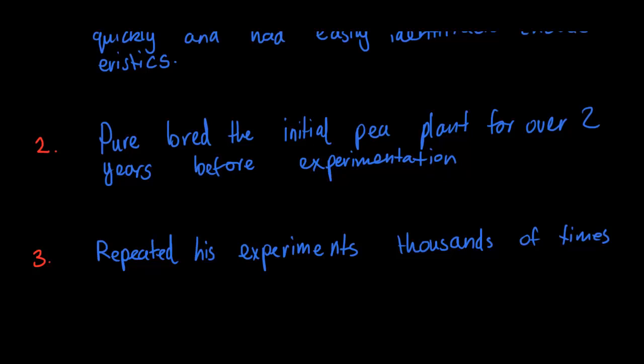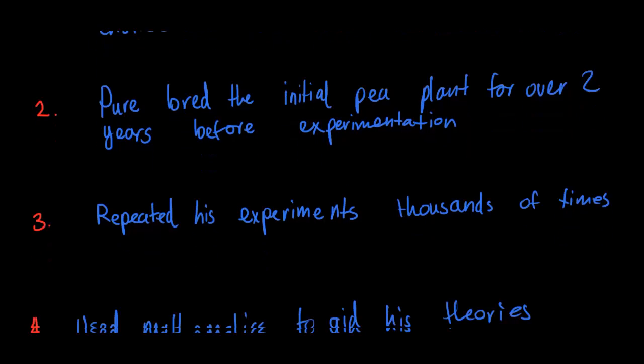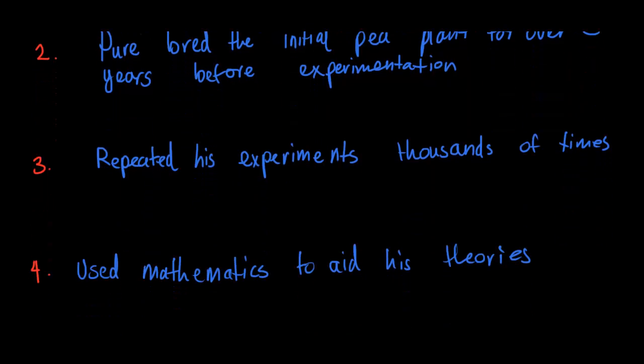Number three: he repeated his experiments thousands of times. I cannot stress this enough — in any experiment, you must repeat it in order to ensure reliability. Our teacher says repeat it nine times, which is a very specific number, but just make sure you repeat an experiment. And that is what Mendel did.